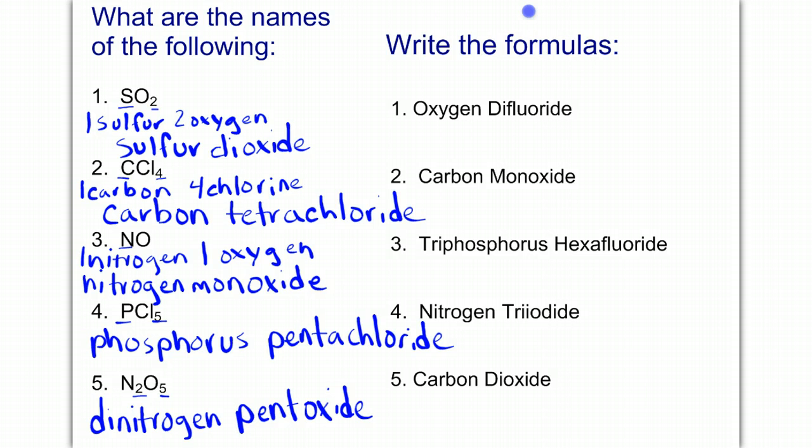Okay, what if I want to write the formula? We have oxygen, that's one oxygen, and difluoride. Di means two. One oxygen, two fluorides. But to write that as a ratio, as our formula, this is a ratio of one to two. So it's one oxygen and two fluorides.